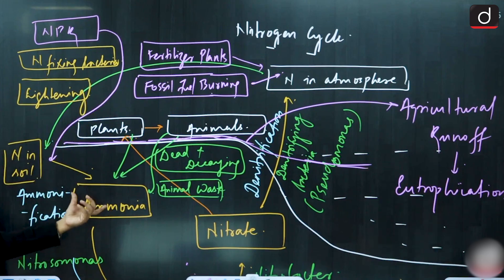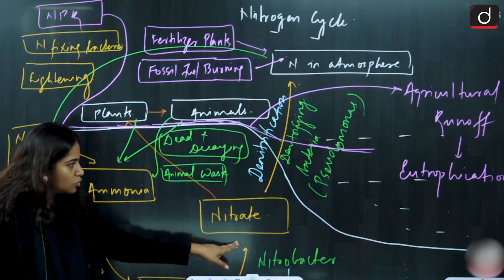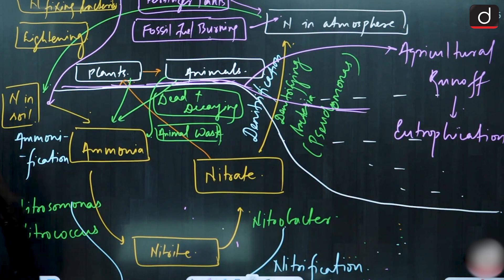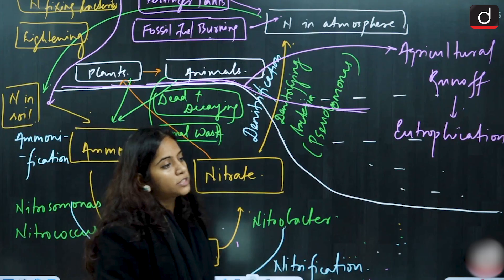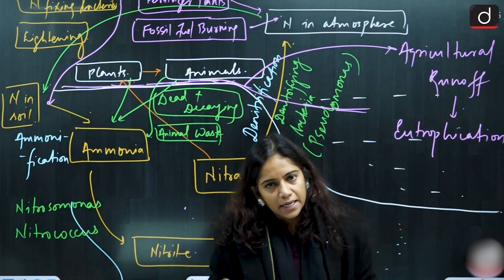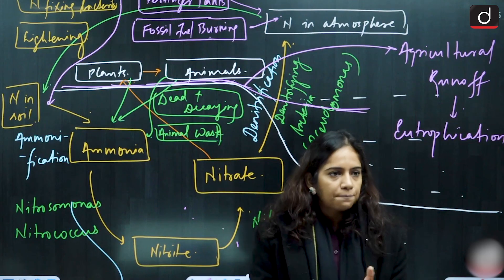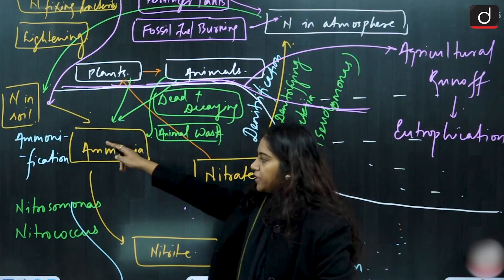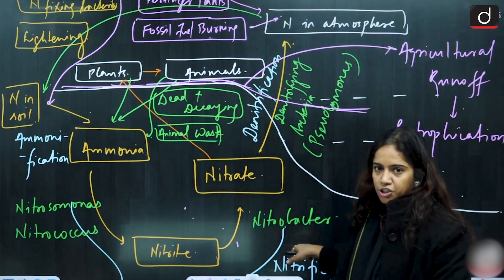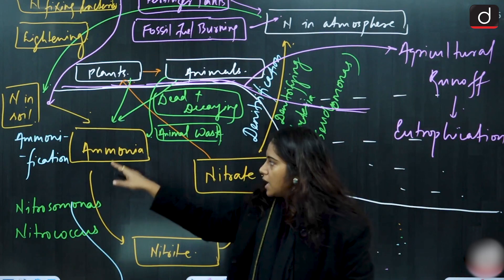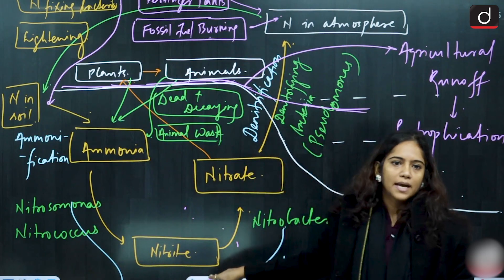From here, it is then converted into ammonia. This process is known as ammonification. Now, it is not that you are fixing the nitrogen in the soil and then it can be taken by the plants directly. You are fixing the nitrogen in the soil and then also it is not usable by the plants. It has to be converted in a form in which it can be absorbed by the plants and that happens after two more processes: ammonification and nitrification. The ammonification happens here from nitrogen in the soil which is converted to ammonia. Ammonia is then converted to nitrites.